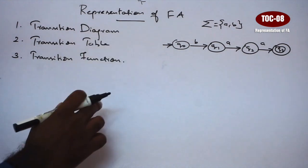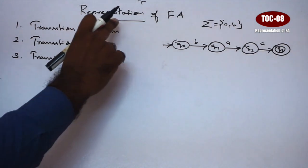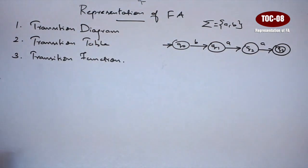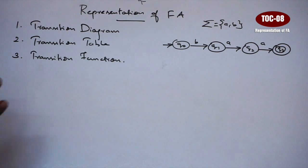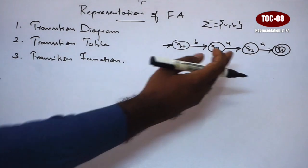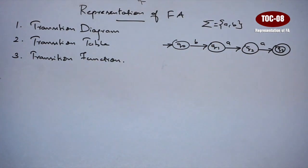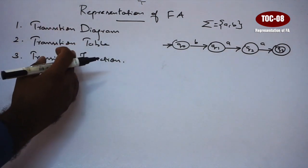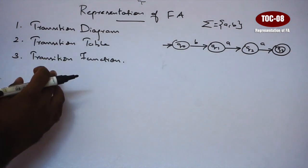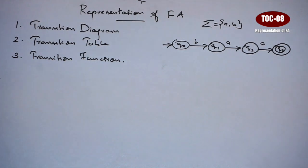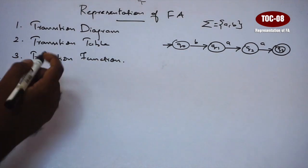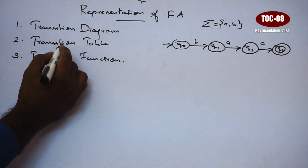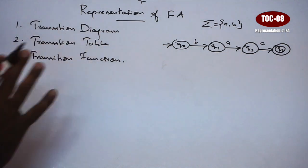Hi friends. Now we are going to talk about the representation of finite automata. In the previous video, we covered the formal definition of finite automata, so we have a little idea. In finite automata, how do you represent the finite automata? If you ask the question in university, how do you use finite automata? You can use the transition function or you can use the table.